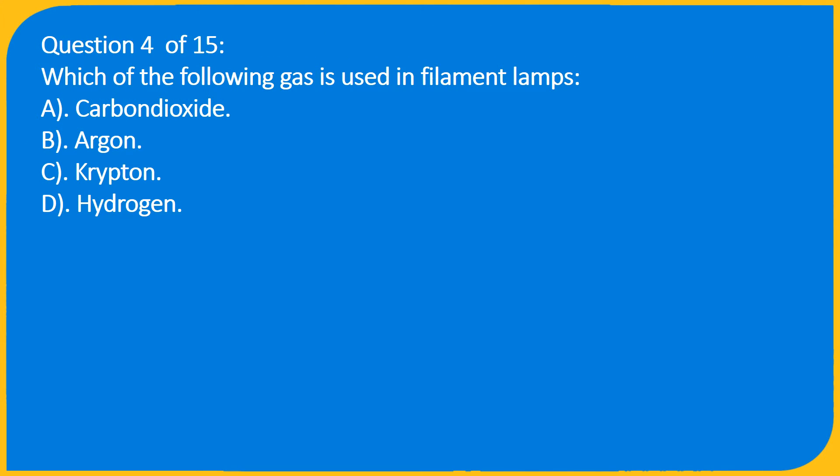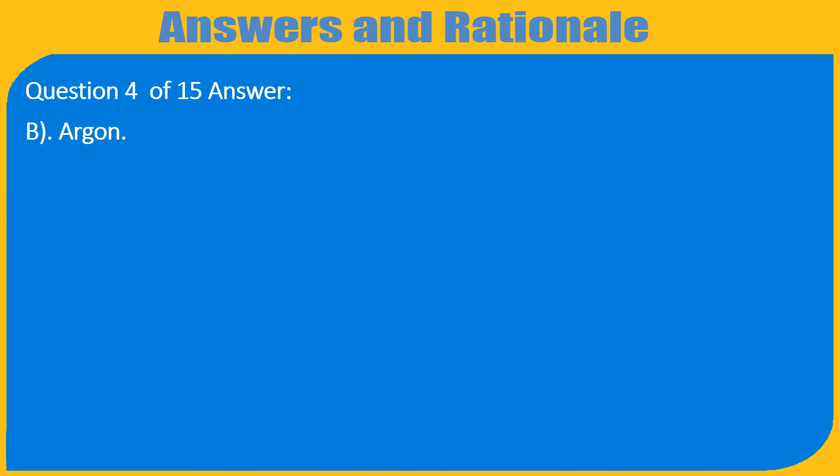Question 4 of 15: Which of the following gases used in filament lamps: A. Carbon Dioxide, B. Argon, C. Krypton, D. Hydrogen. Answer: B. Argon.